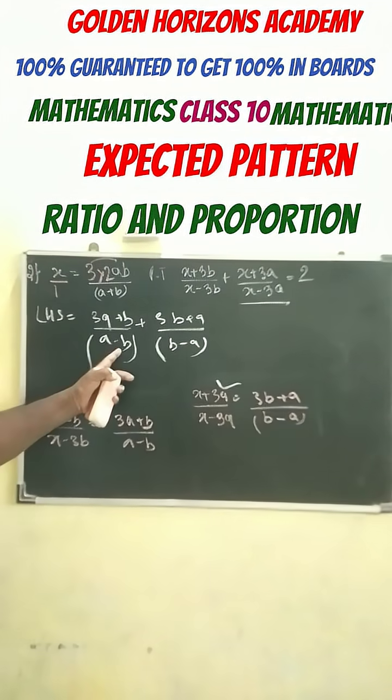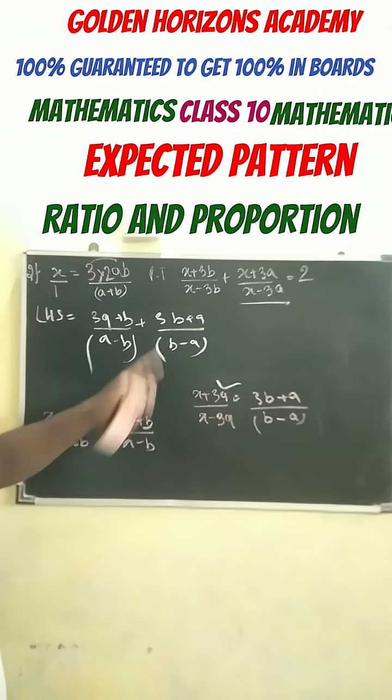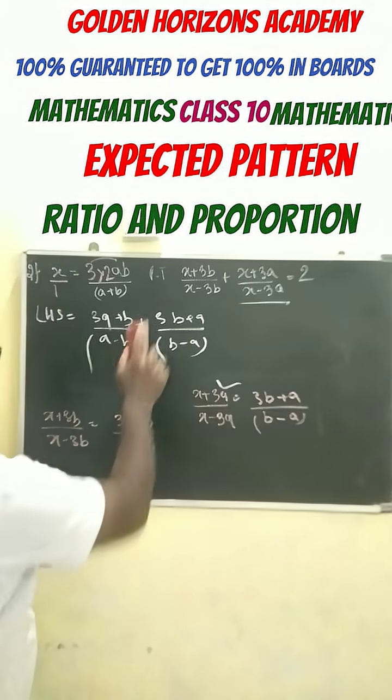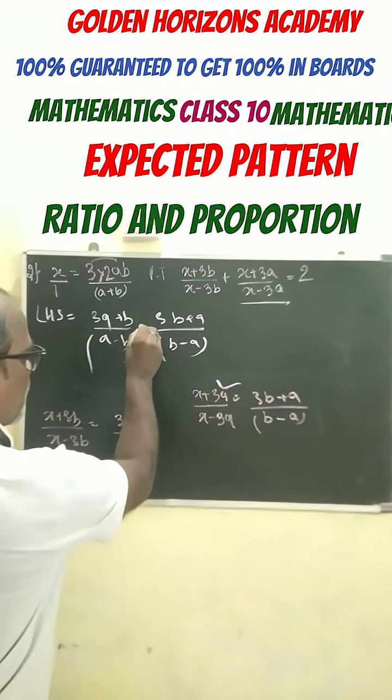See here, here it is a minus b, here it is b minus a. Just changing the sign here. So if you change the sign here, make it here minus. Then it is plus and minus here.